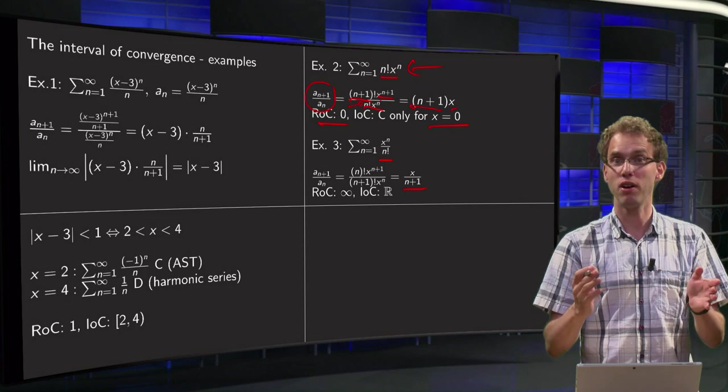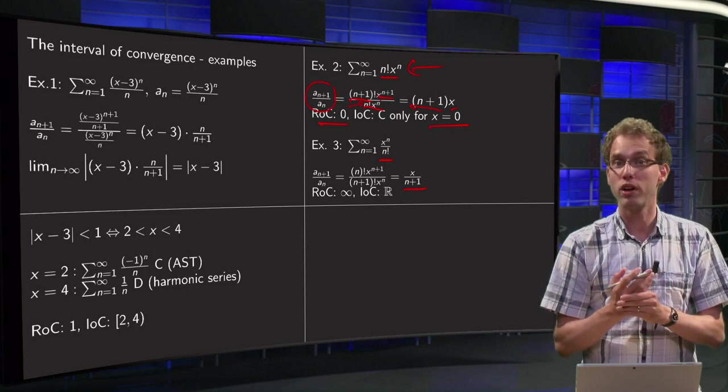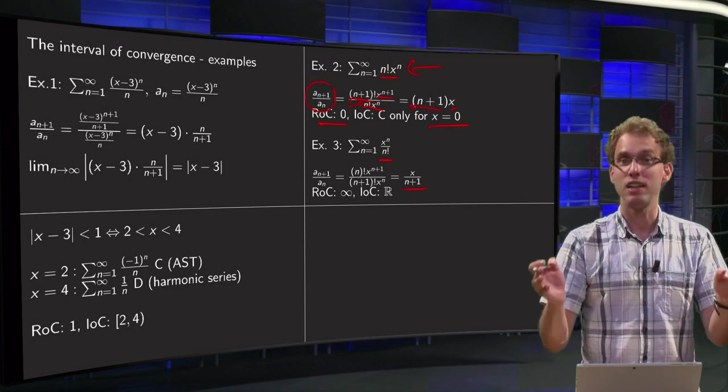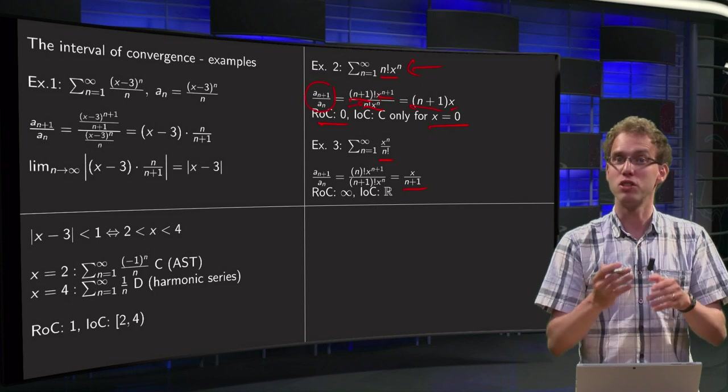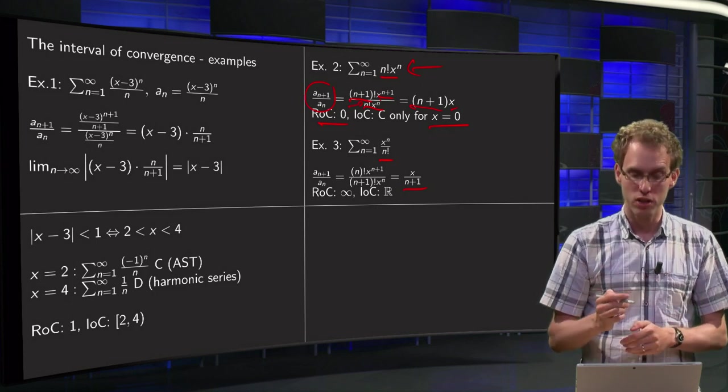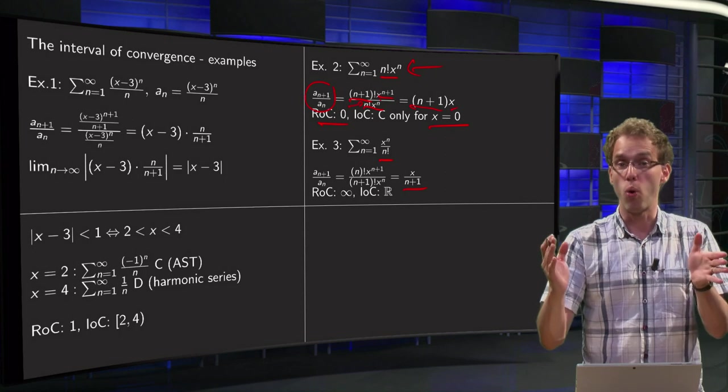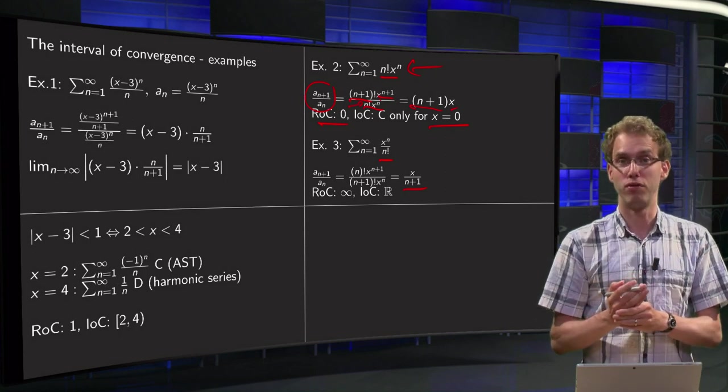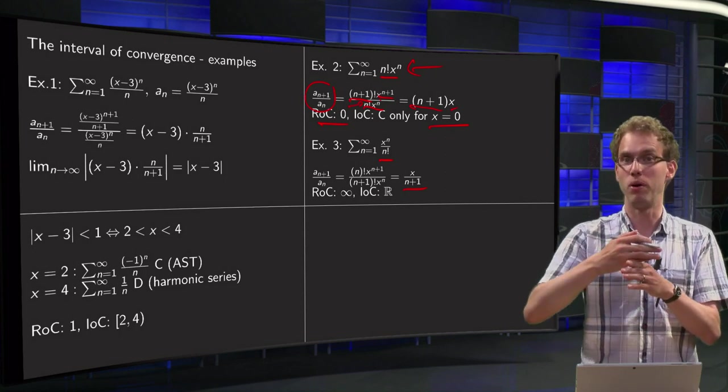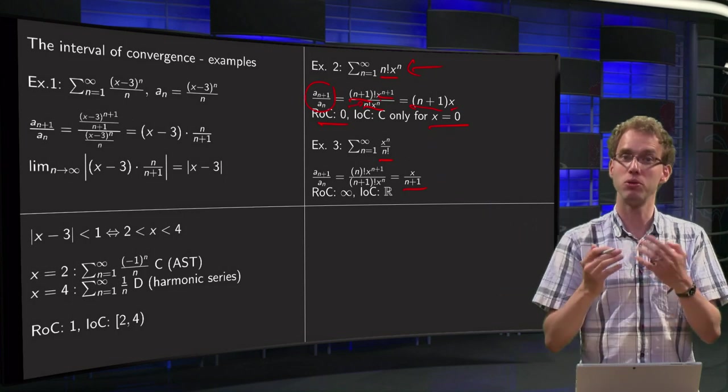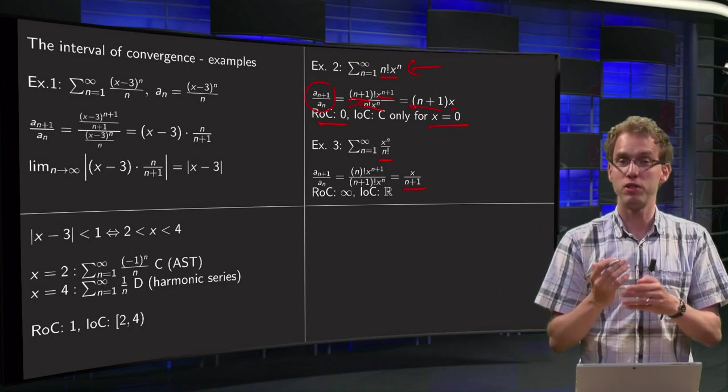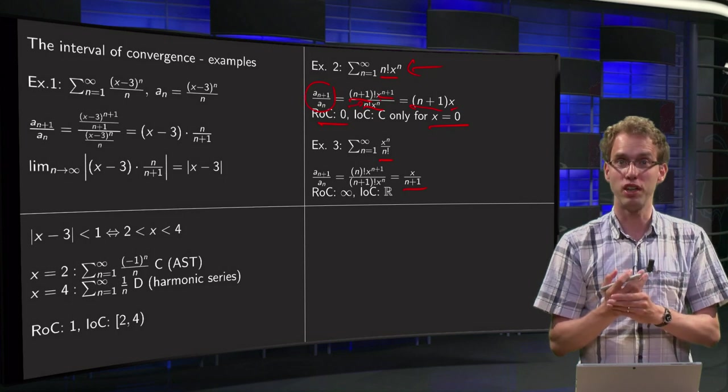If we now take the limit n to infinity, this limit will always be 0, it will always be smaller than 1, so whatever x we take will always converge. So the interval of convergence is all of R, and the radius of convergence is the distance from 0 to as far as we like, which means that we call this radius of convergence infinity.